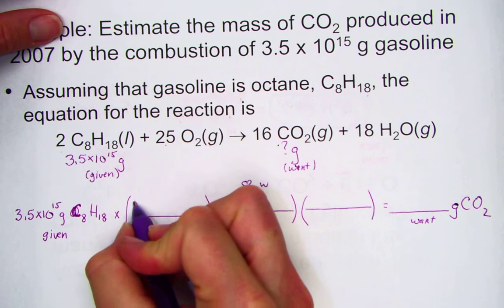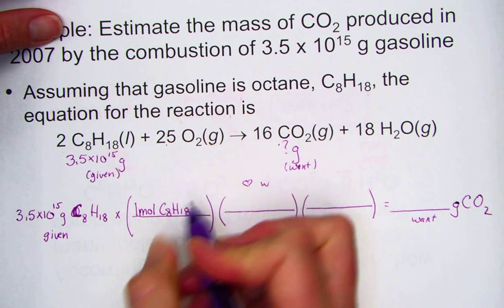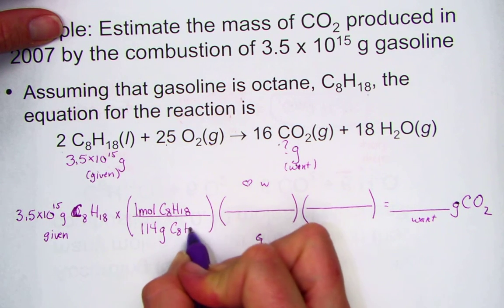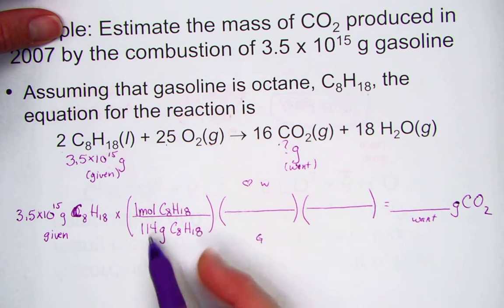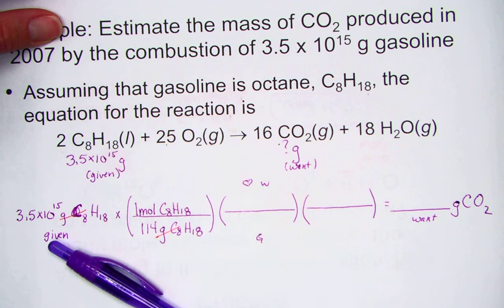Here's what we know. Every one mole of C8H18 would have a molar mass of 114 grams. That cancels the mass unit, grams, and brings us into the mole.